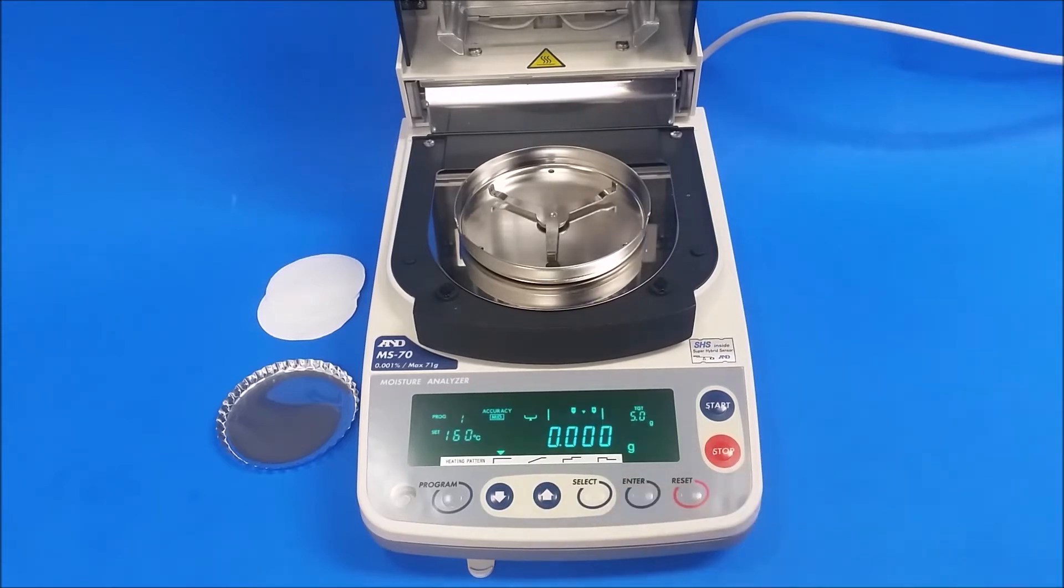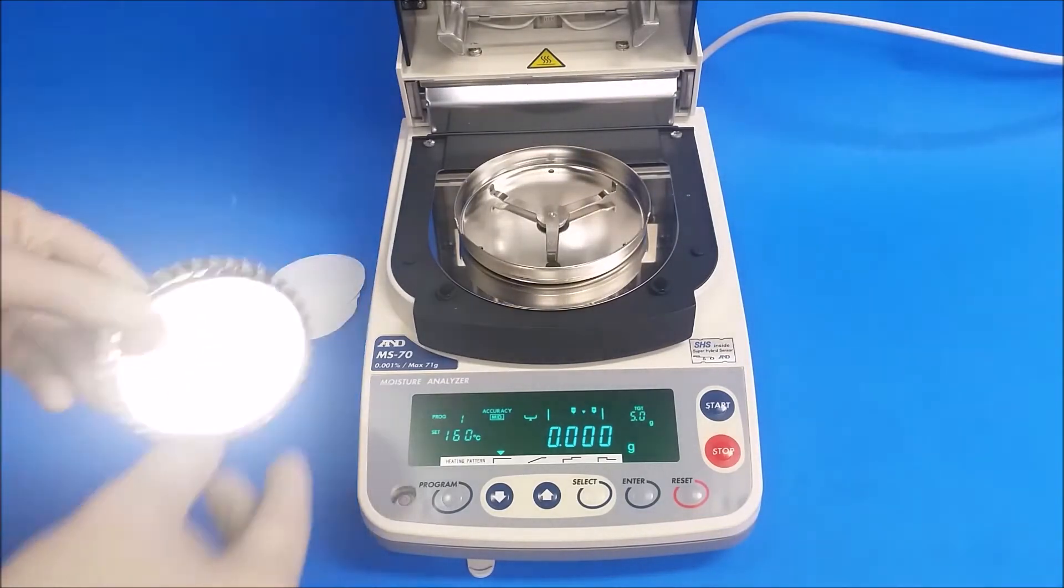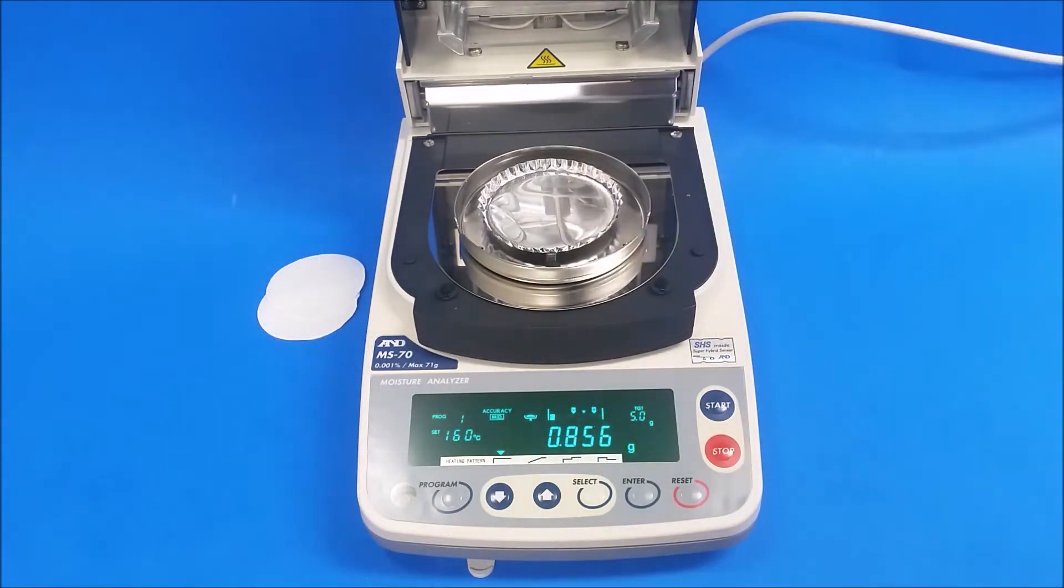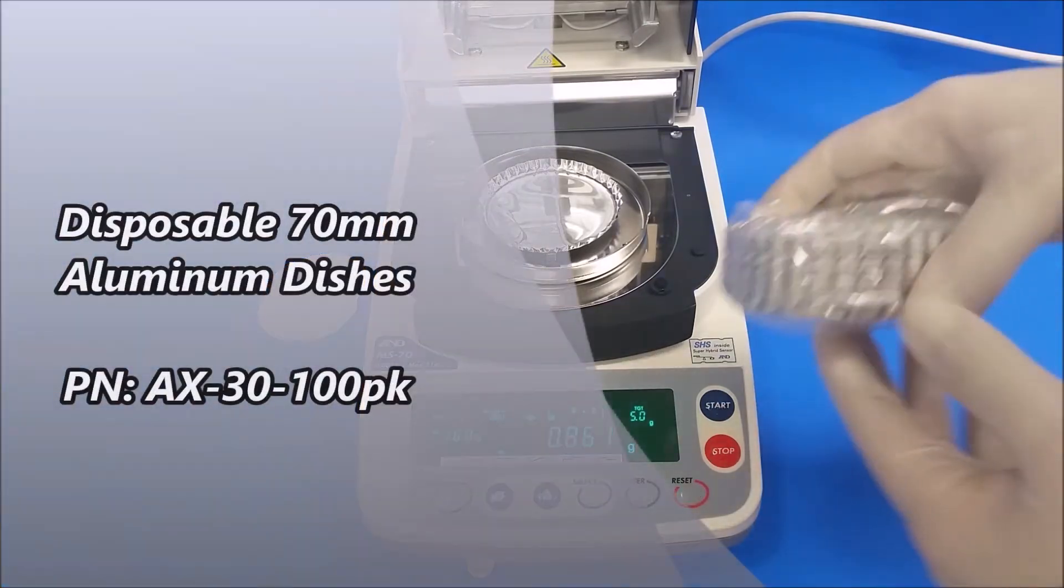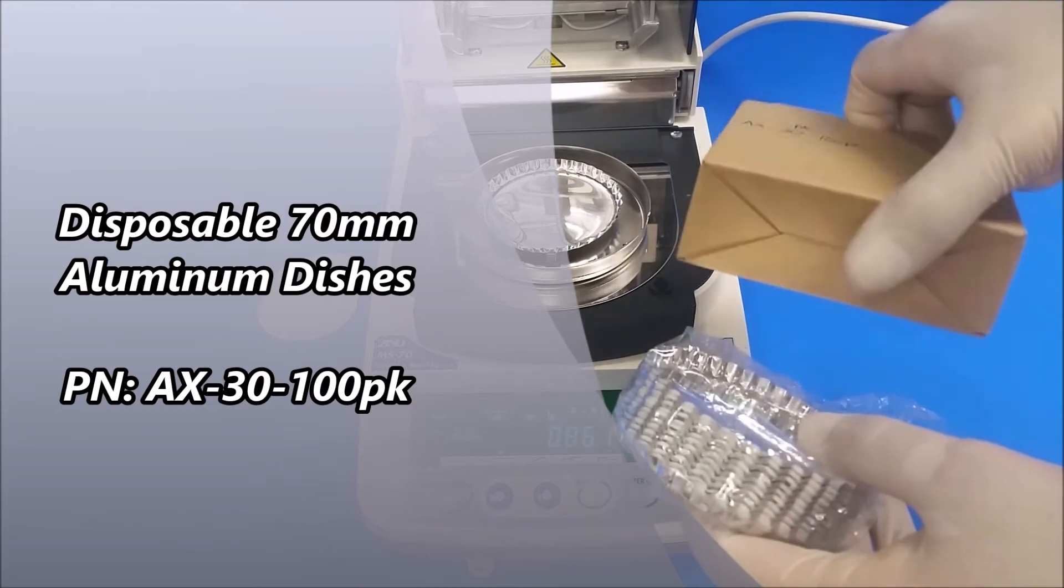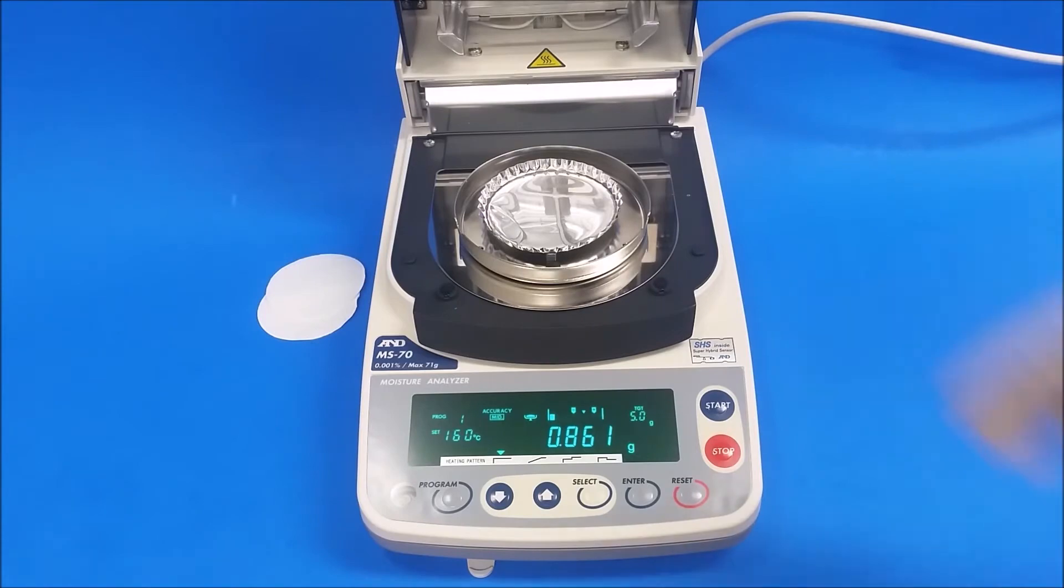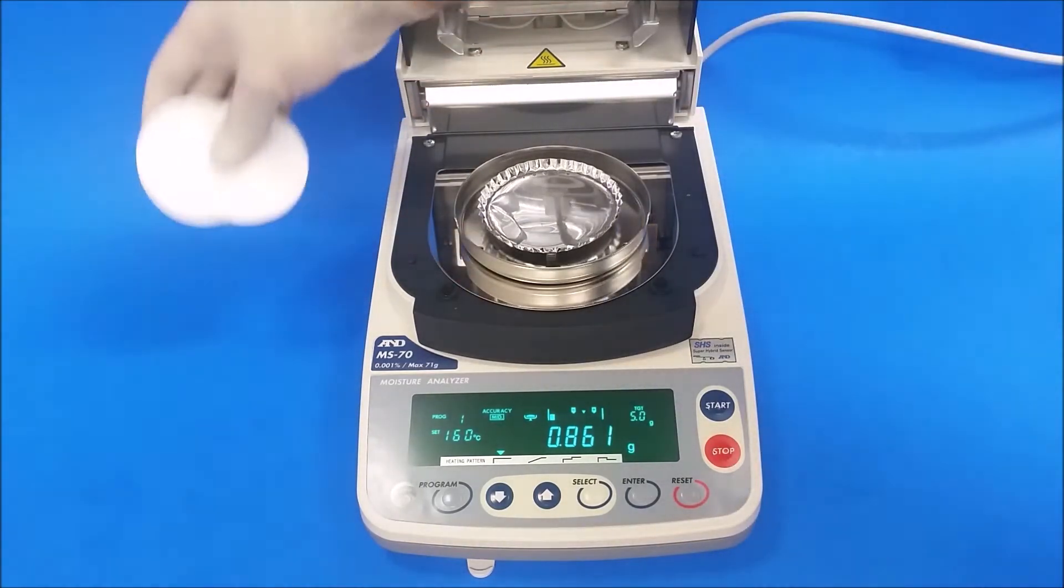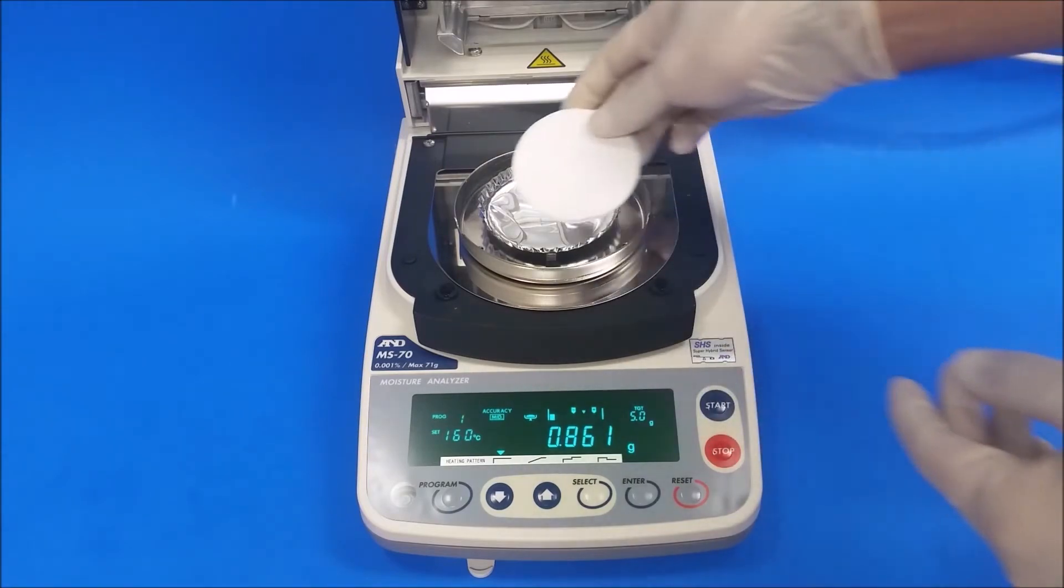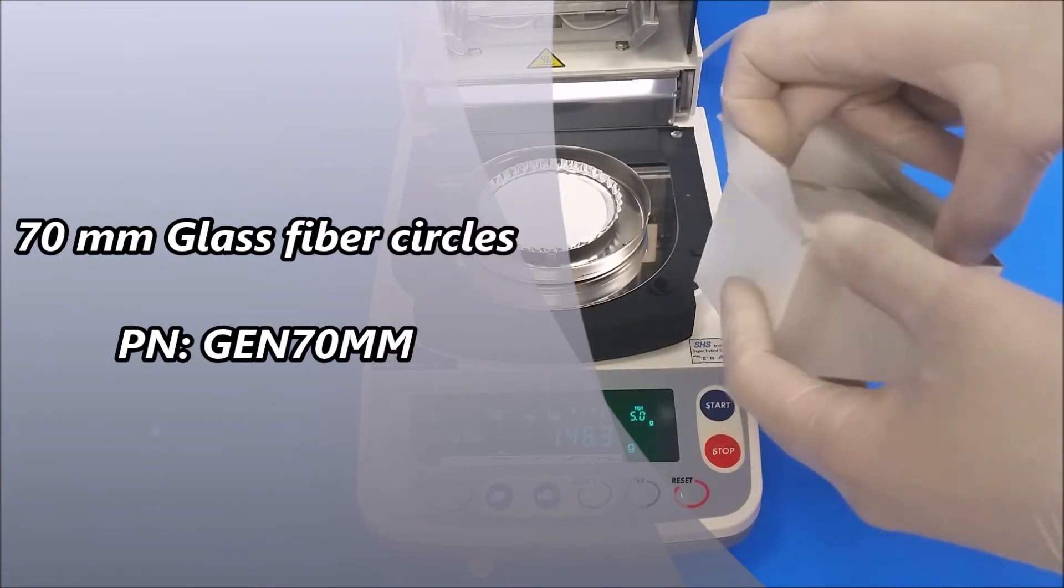Next I'm gonna put the aluminum dish. Those come in a pack of hundreds and they should look something like this. They come in a little brown box. Next I'm gonna put my two fiberglass pads. Those we also have. They come in a white glossy box, pack of hundreds.